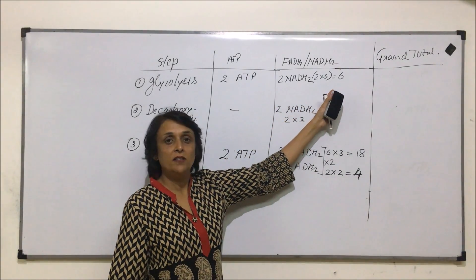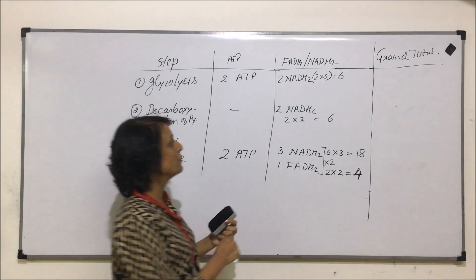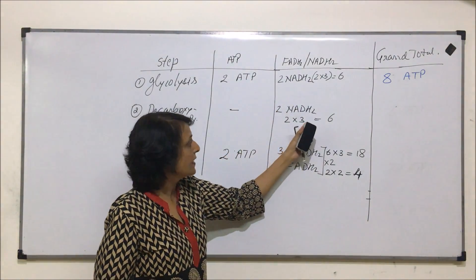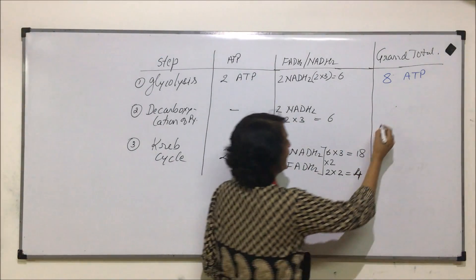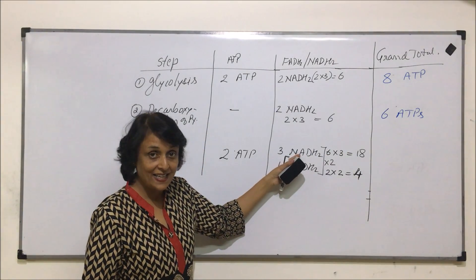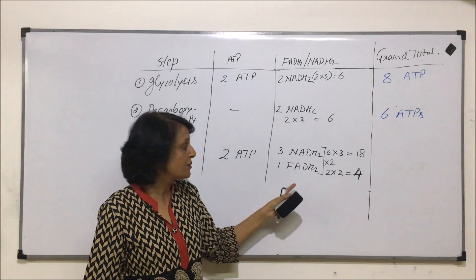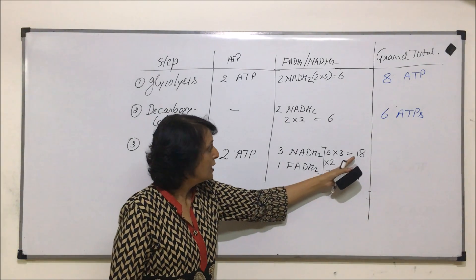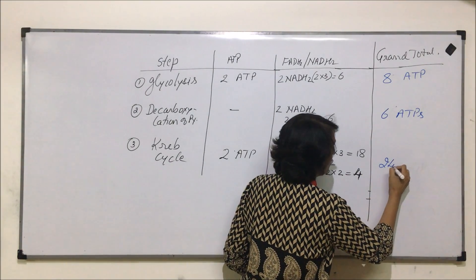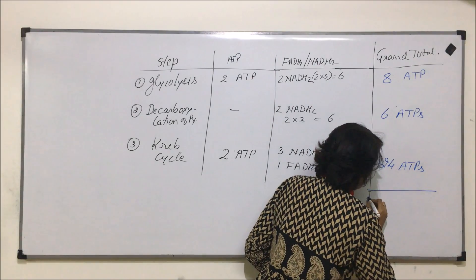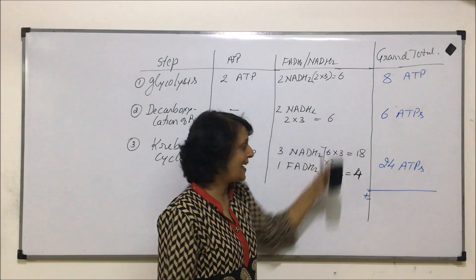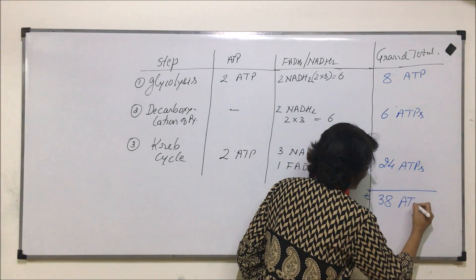Now let us do a grand total. In glycolysis we have eight ATPs overall (two direct plus six from NADH). In decarboxylation we have six ATPs. In Krebs cycle, 18 from six NADH and four from two FADH2 gives 22, plus two direct ATPs gives 24. Adding all three steps: 24 plus 6 plus 8 gives us 38 ATPs.